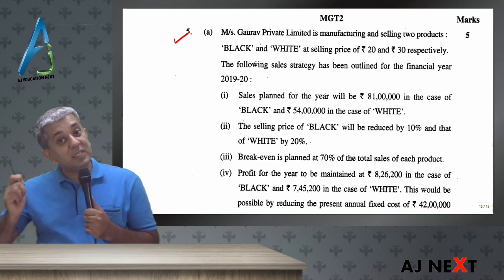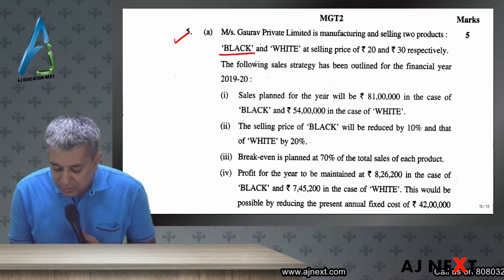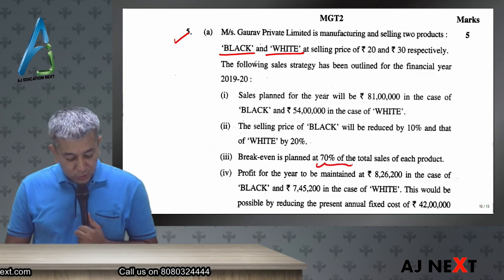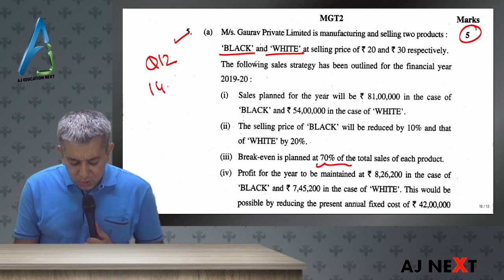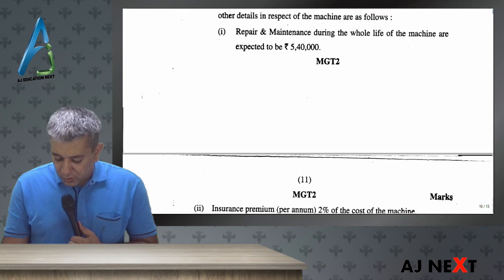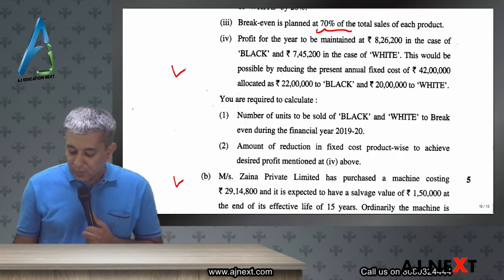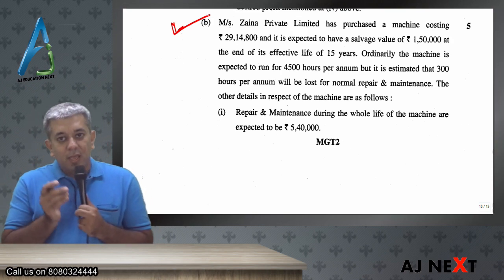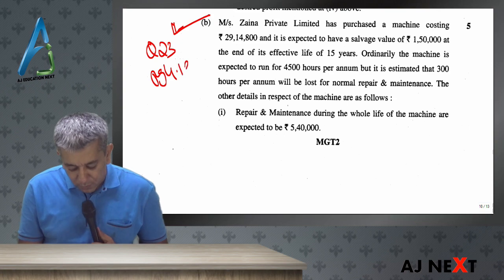Question number five was from our CVP analysis. In our CVP analysis, two products were named Splash and Flash. Here the names were changed to Black and White, numbers were slightly changed, a couple of numbers and percentages were changed, and that became your question number 5A, asked for five marks. That was question number 12 in your textbook, on page number 14.5 — quite a manageable question, almost the same as whatever we all had done. Overheads was an important topic and as expected, they asked a question on CMHR. This was almost similar to our first question of CMHR, which was question number 23 on page number 4.13. Almost everything from our books.